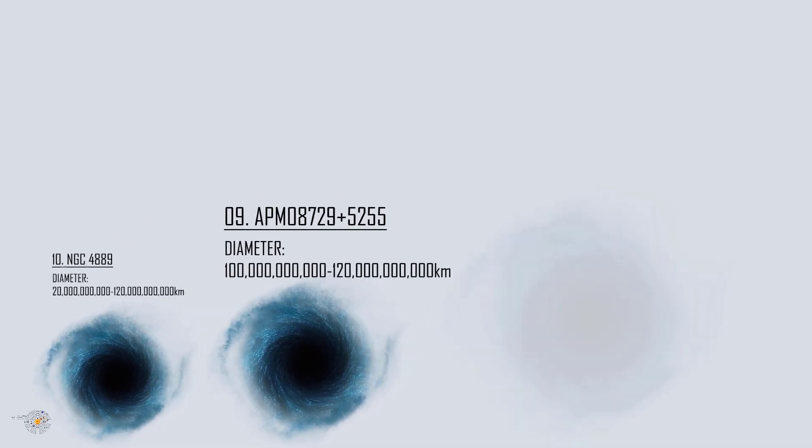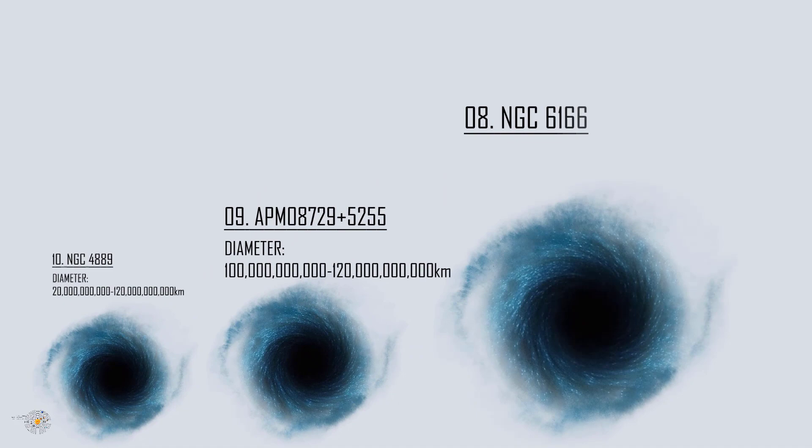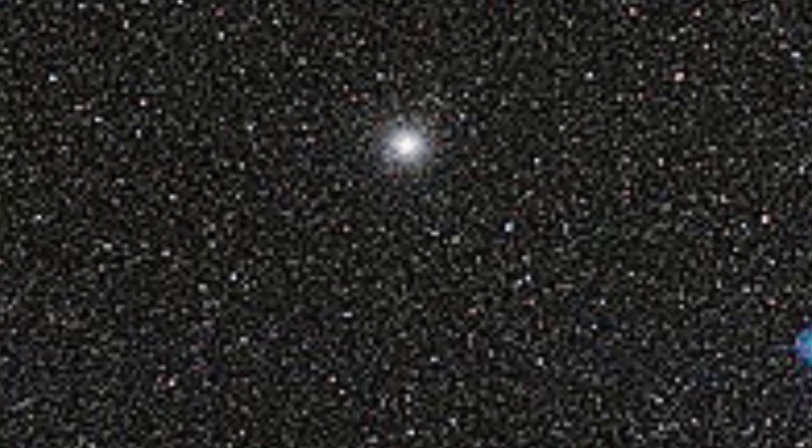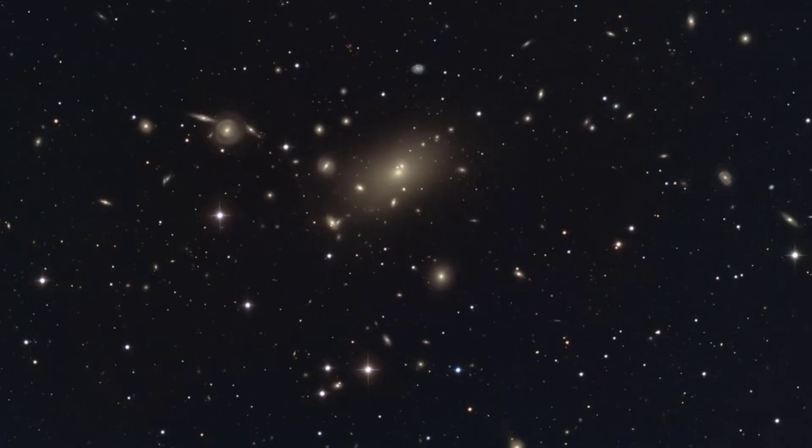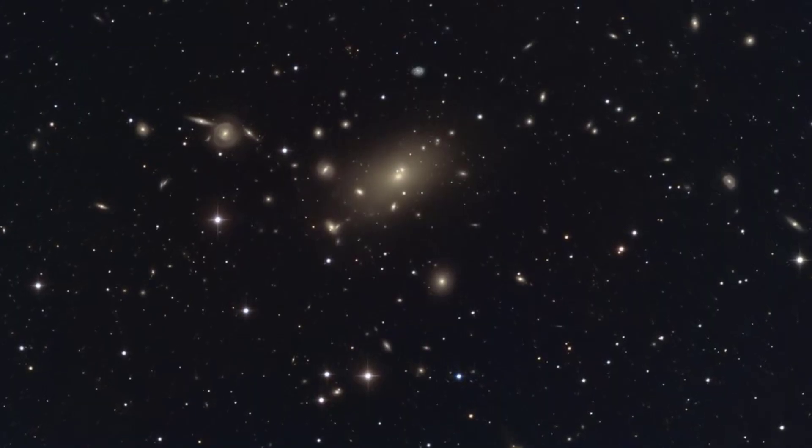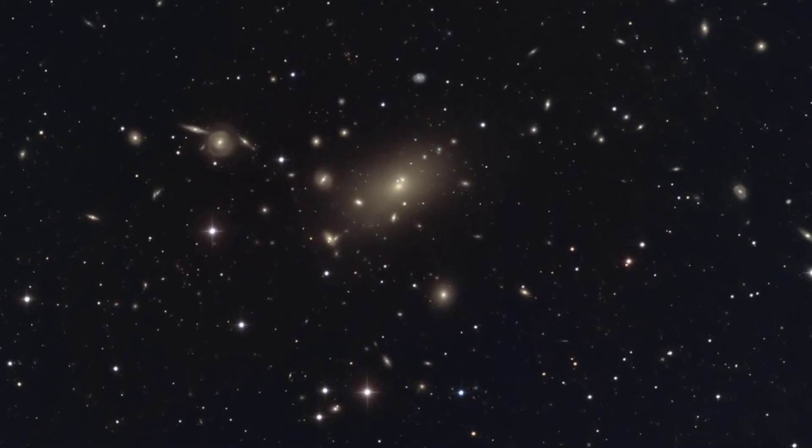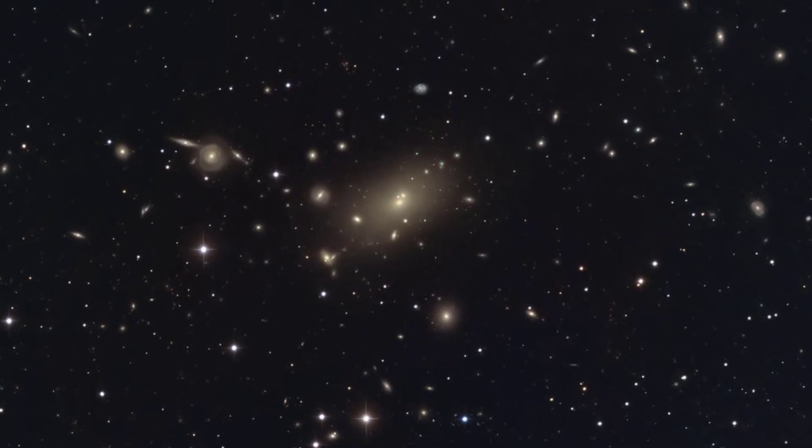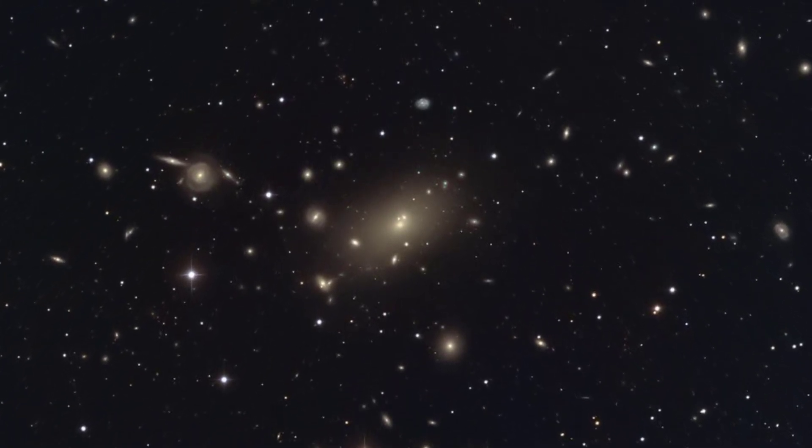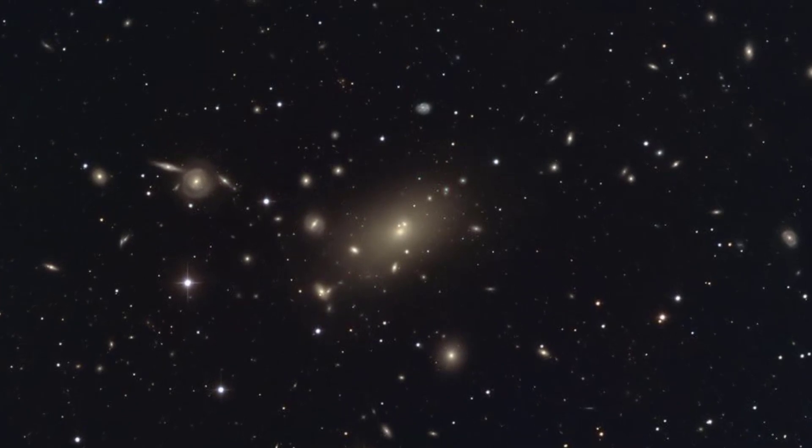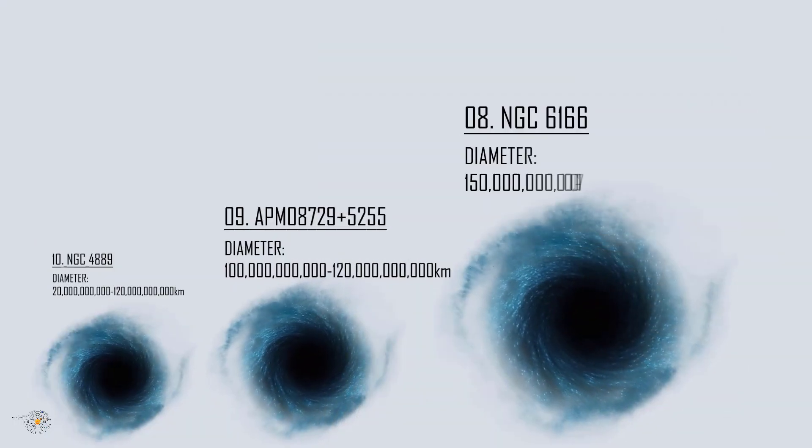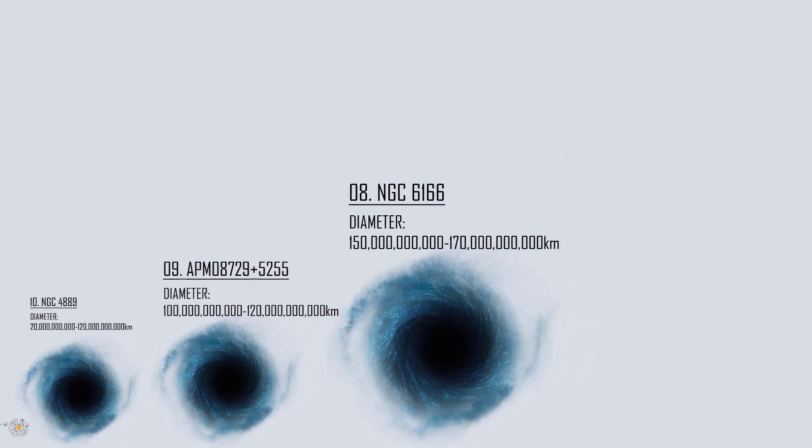Number 8: NGC 6166. NGC 6166 is an elliptical galaxy in the Abel 2199 cluster. It is a supermassive type CD galaxy with several smaller galaxies within its envelope. It lies 490 million light years away in the constellation Hercules. The galaxy harbors an ultra-massive black hole at its center with a mass of nearly 30 billion solar masses and a diameter of around 15 to 17 times Pluto's orbit.